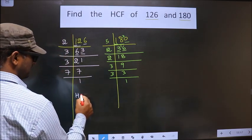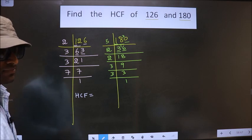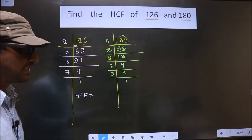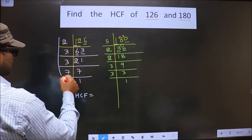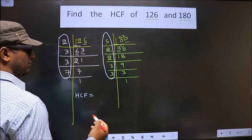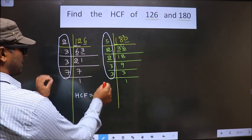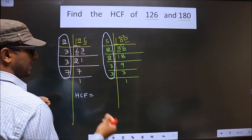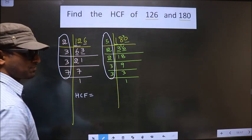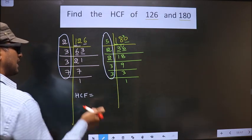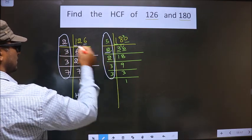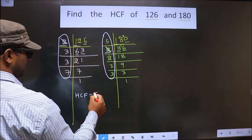So now, our HCF is. HCF is the product of numbers that are present here and also here. So now, we should find the numbers that are present in these two places. I repeat, we should find the numbers that are present in these two places. So let us find. Starting with the number 2. Do we have 2 here? Yes.